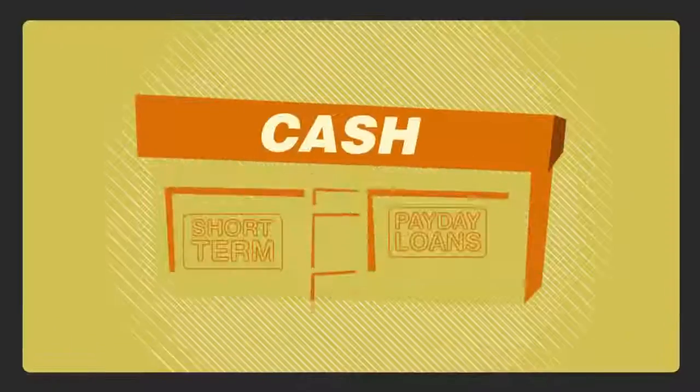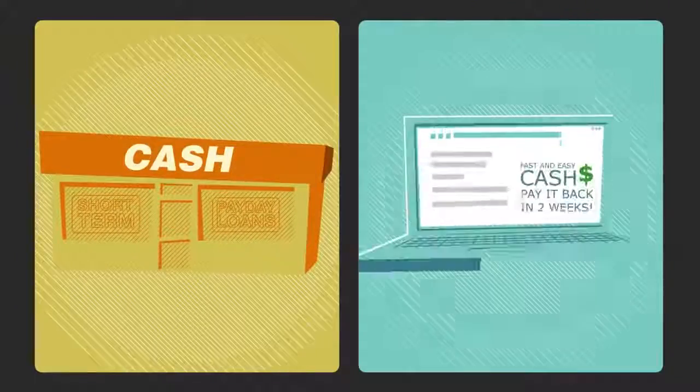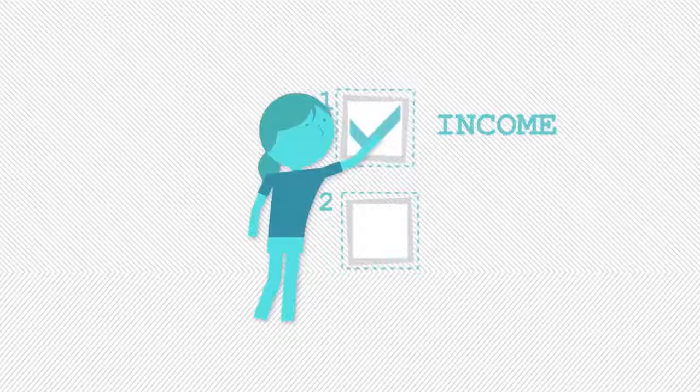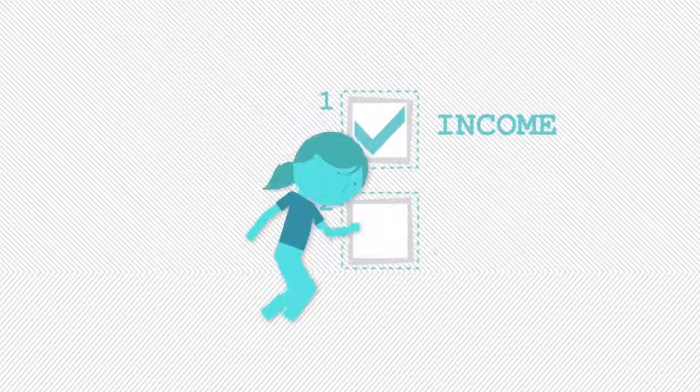You can get them in lots of places. In storefronts, online, even in a few banks. To qualify, Jennifer needs two things: income, easy, she's got a job, and a checking account.